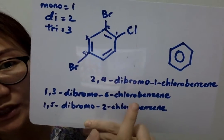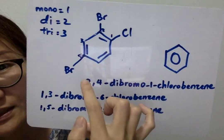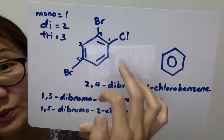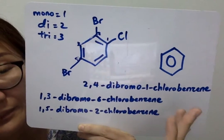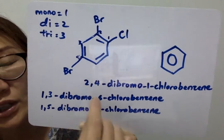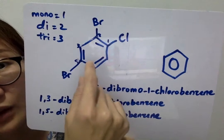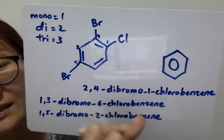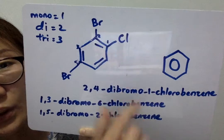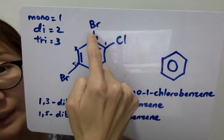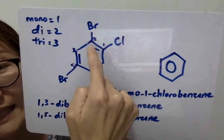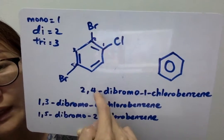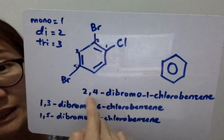When you want to name a molecule, if there are two substituents which are the same, you've got to give the position of these substituents — at which carbons are they located. So for bromine, it's located on the second and the fourth position. So you've got to put 2,4. And between the numbers, you've got to put a comma.